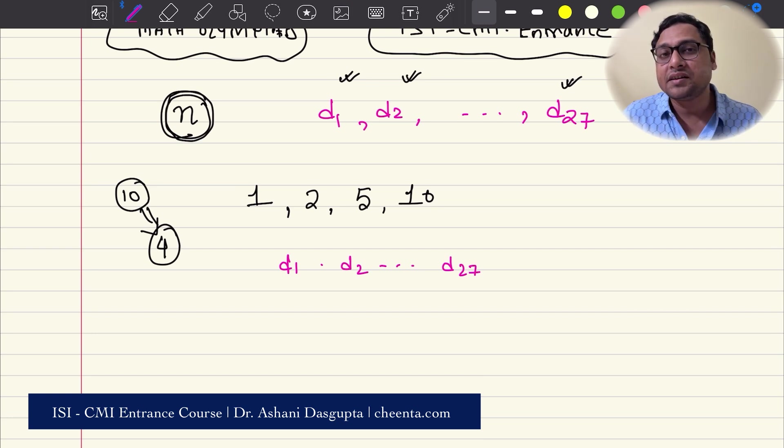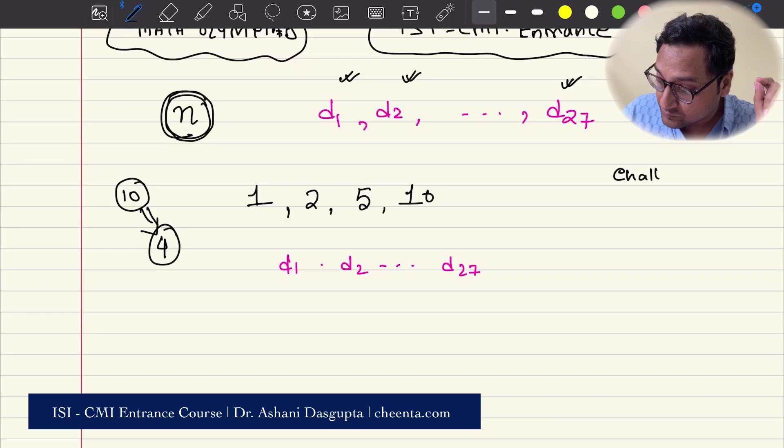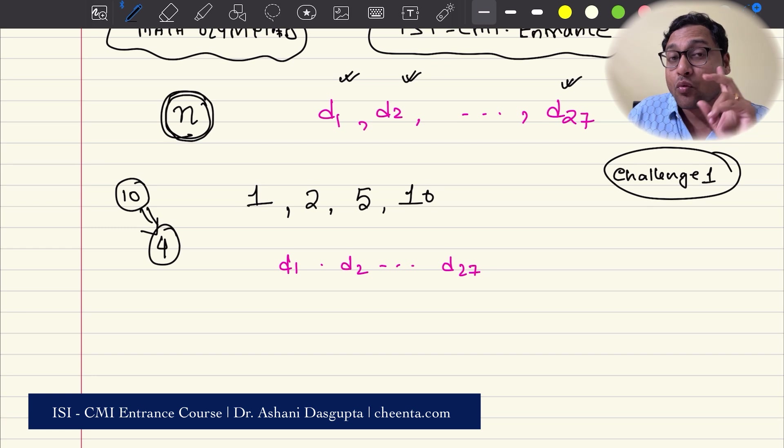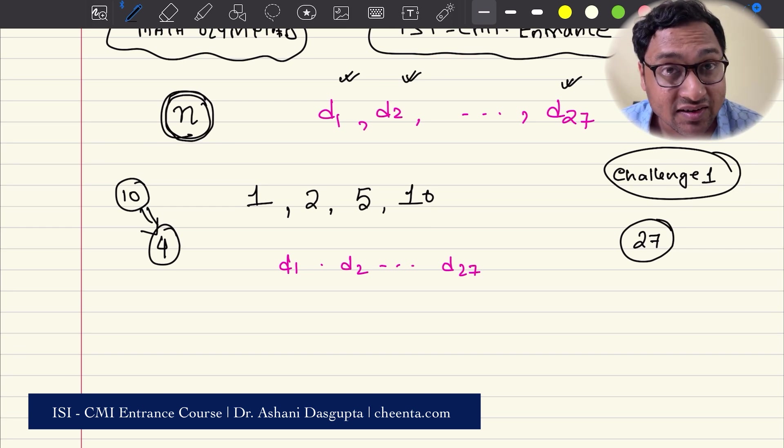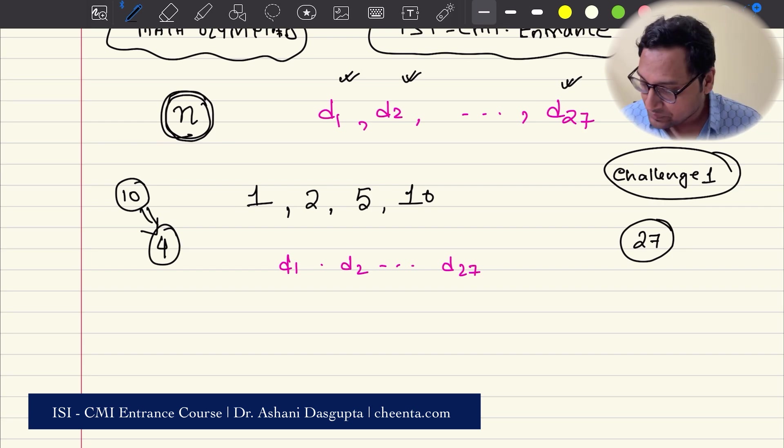Now here is the first challenge problem. This is challenge 1. Can you find one number with exactly 27 divisors? Can you find two numbers? Three numbers? Can you find a few numbers with exactly 27 divisors? Give it a try. If you can, please put it in the comment section.